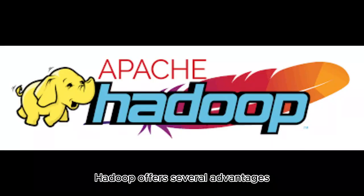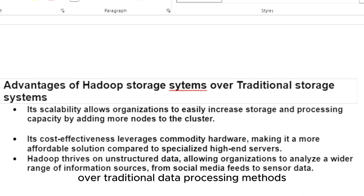Hadoop offers several advantages over traditional data processing methods. Firstly, its scalability allows organizations to easily increase storage and processing capacity by adding more nodes to the cluster. Secondly, its cost-effectiveness leverages commodity hardware, making it a more affordable solution compared to specialized high-end servers. Lastly, Hadoop thrives on unstructured data, allowing organizations to analyze a wider range of information sources, from social media feeds to sensor data.